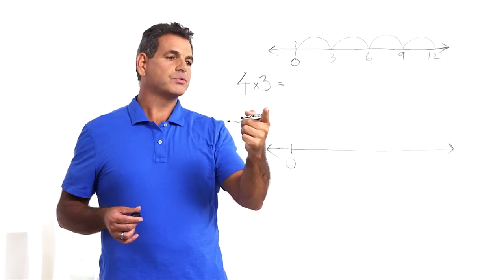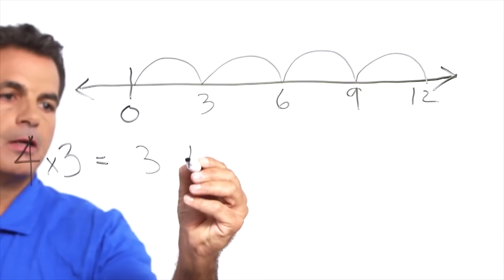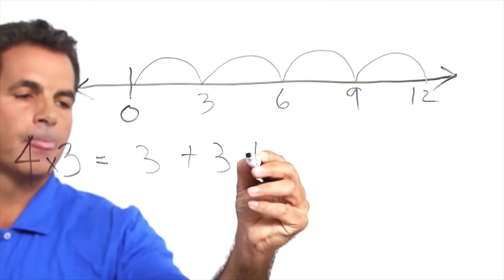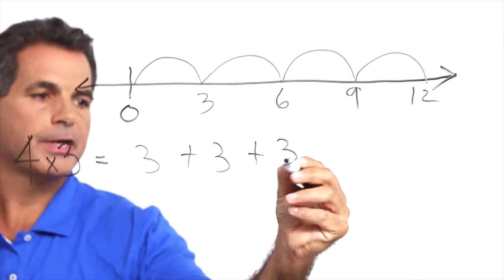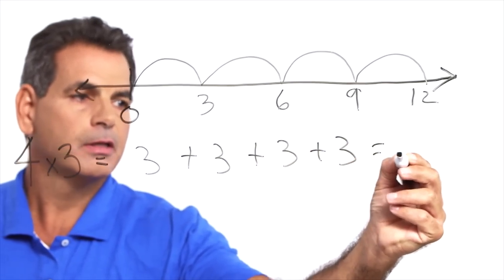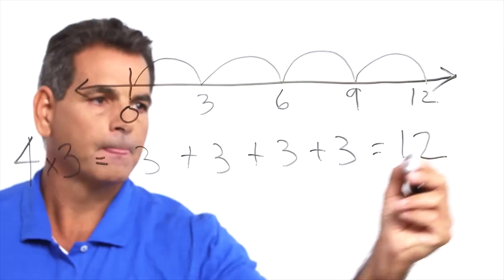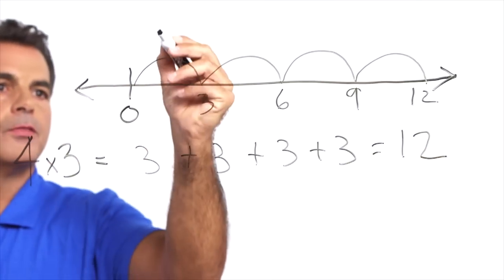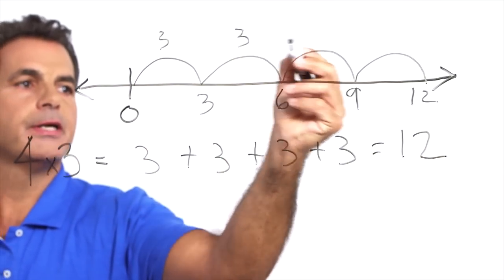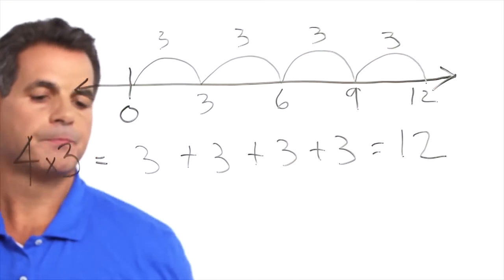So four times three equals three plus three plus three plus three equals twelve.